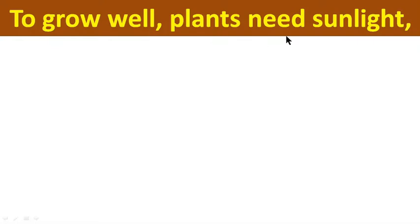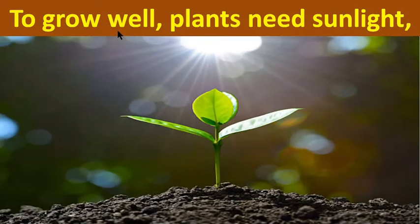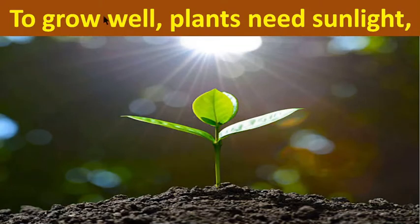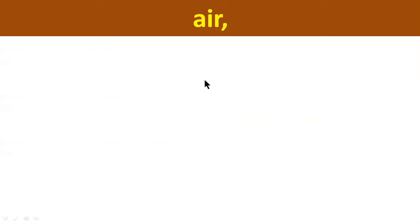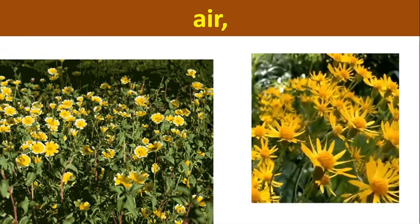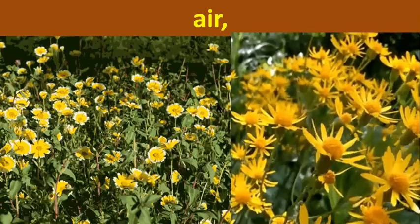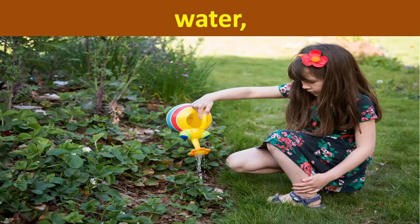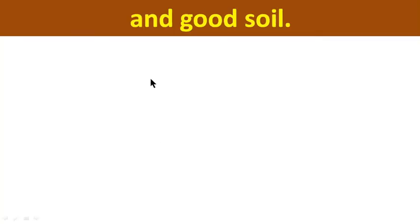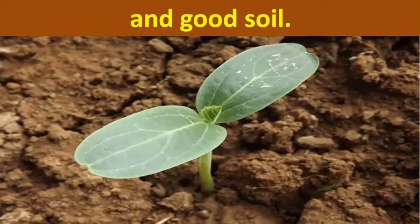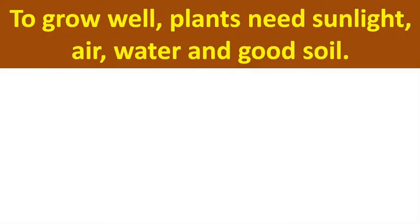To grow well, plants need sunlight. Sunlight is very important for plants. And air is very important for plants. Also water for plants, and good soil for plants. Good soil is important for plants.